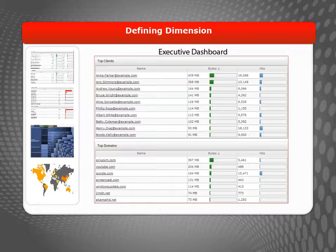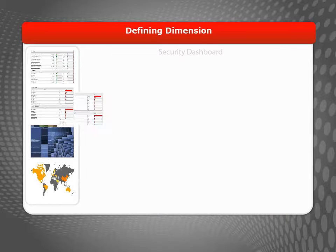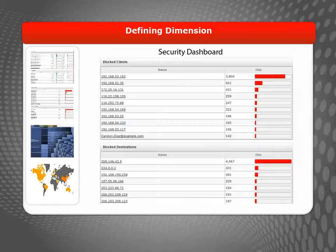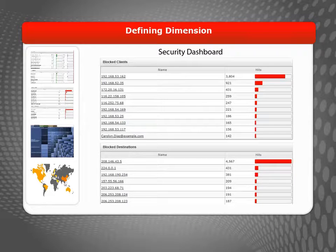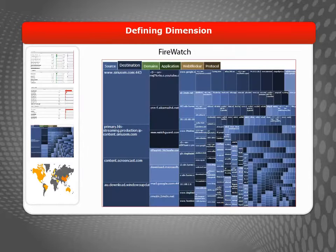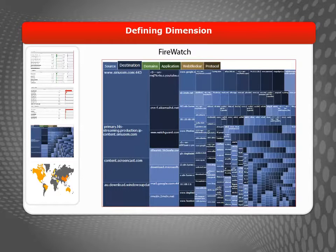What is WatchGuard Dimension? Simply put, Dimension boils down vast amounts of network intelligence into usable and actionable data delivered in a unified view. It is a secure, cloud-ready, centralized logging